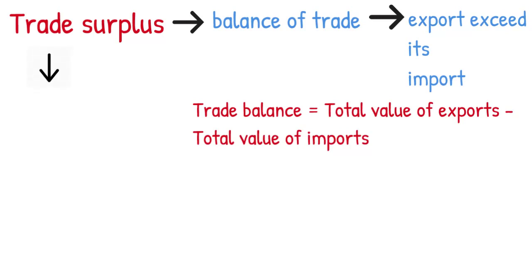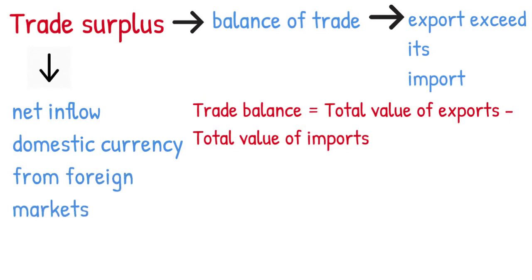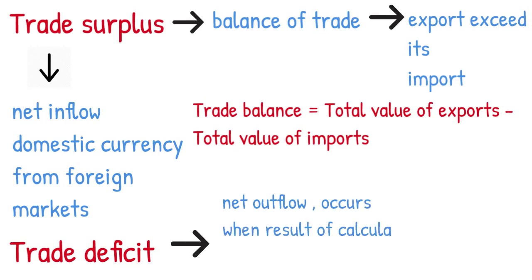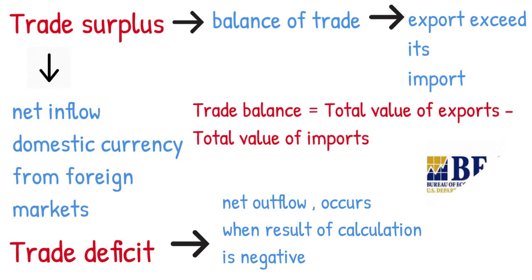A trade surplus represents a net inflow of domestic currency from foreign markets. It is the opposite of a trade deficit, which represents a net outflow, and occurs when the result of the above calculation is negative. In the United States, trade balances are reported monthly by the Bureau of Economic Analysis.